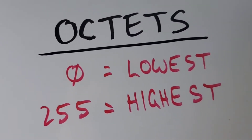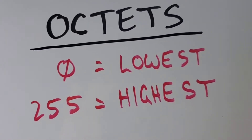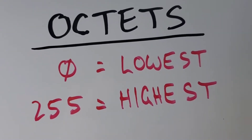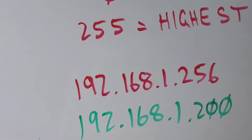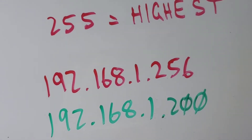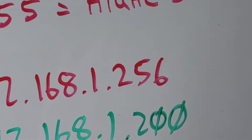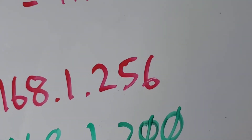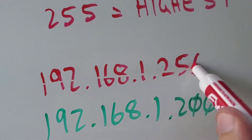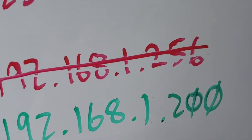For each octet in an IP address, the lowest number it can be is zero, and the highest number it can be is 255. For example, 192.168.1.256 — 256 is over 255, so that is not a valid IP address. That's not a possible IP address.